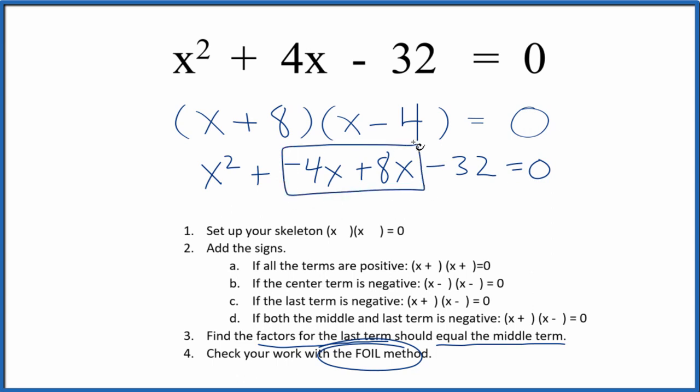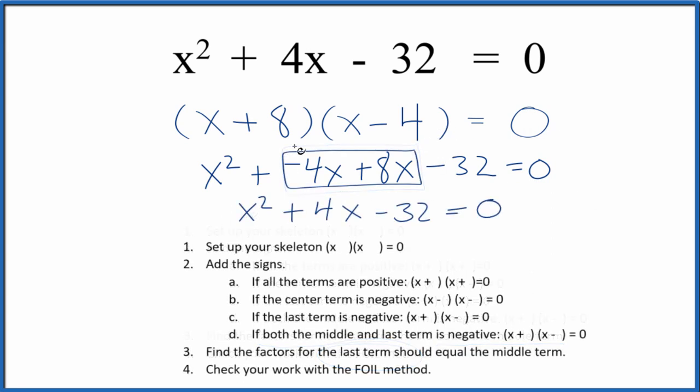We can combine these, and we end up with the same thing we started with. So we've done this correctly. Let's figure out what values for x here would make this all equal to 0. 0 equals 0. True statement.